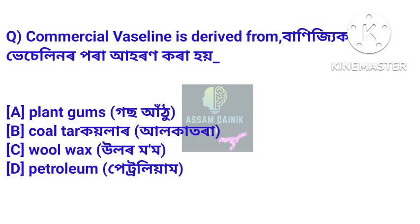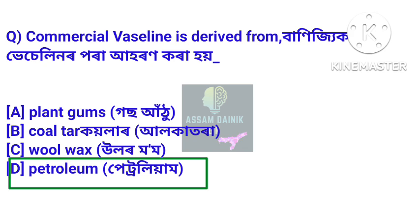Question 15: Commercial Vaseline is derived from — Banijik Vaseline or para ahoran kora hoy. Answer: Petroleum. Banijik Vaseline or para petroleum ahoran kora hoy.